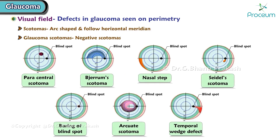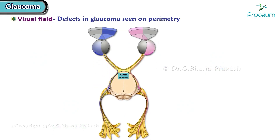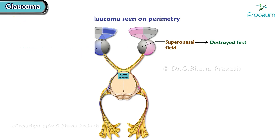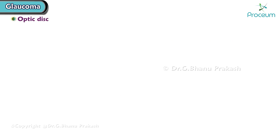Most scotomas are arc-shaped and follow the horizontal meridian. Glaucoma scotomas are negative scotomas. Characteristically, superonasal fields are first destroyed and temporal vision is destroyed last.